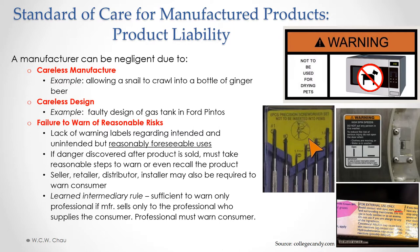There's something called the learned intermediary rule. This applies when a product is sold not by the manufacturer directly to the consumer, but by a professional to a consumer. An example would be breast implants — you would never get a breast implant directly from the manufacturer; you would get it from the plastic surgeon who performs the surgery. So the obligation to warn the consumer, where there is a learned intermediary such as the plastic surgeon, falls on that learned intermediary, not the manufacturer. The manufacturer's obligation is only to warn the professional.